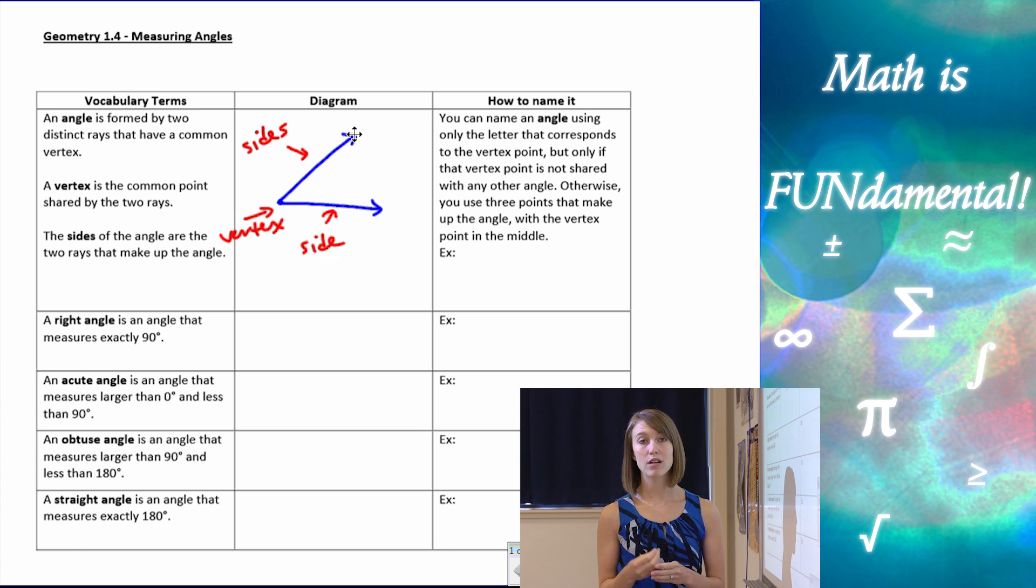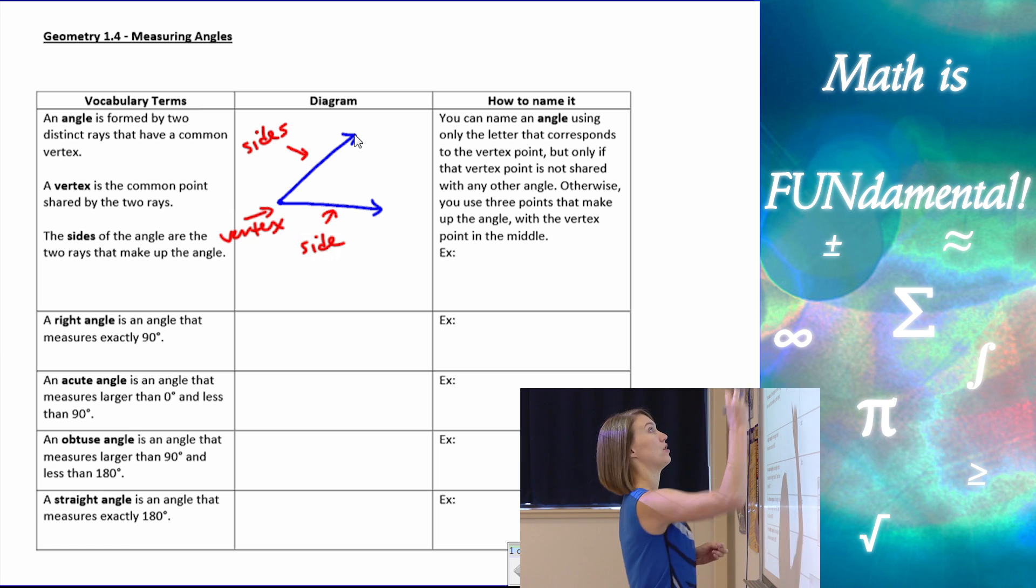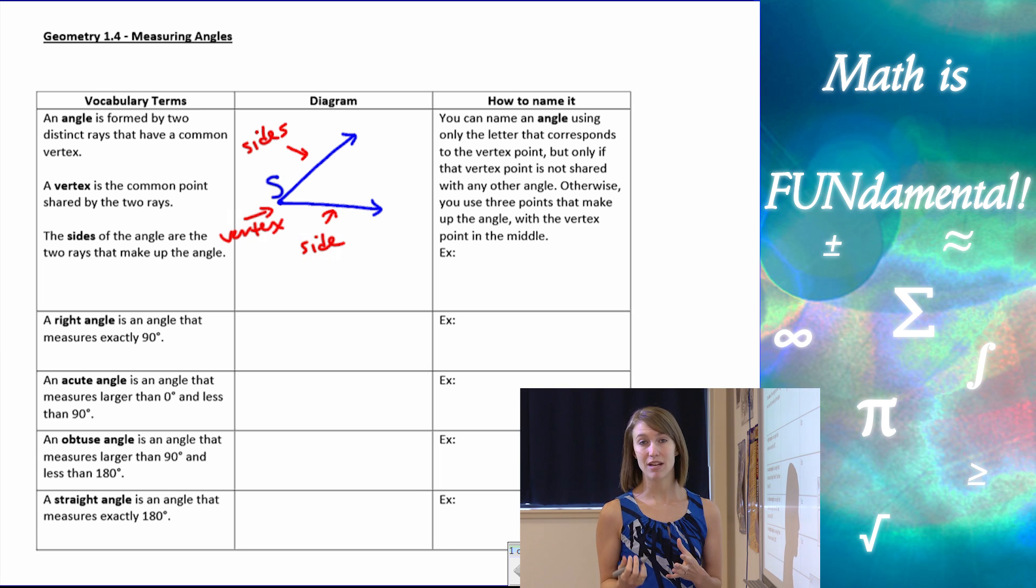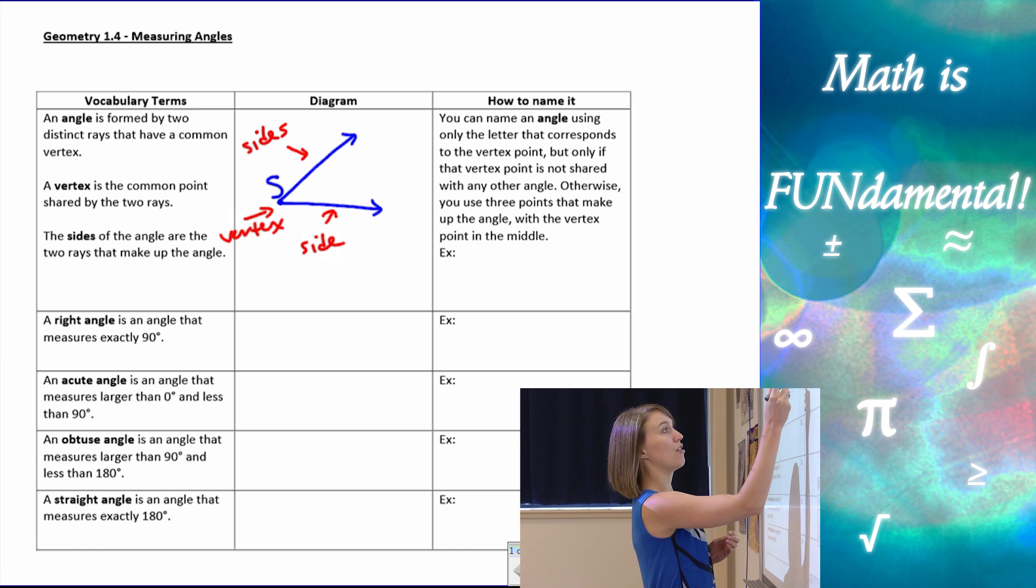Now to name the angle, we're going to need to put some points on our angle itself. So here I can have a point just on the vertex. Let's call it S, point S. And here I can name an angle simply by just naming the point. So we're going to make an angle symbol which looks like this and put an S next to it.